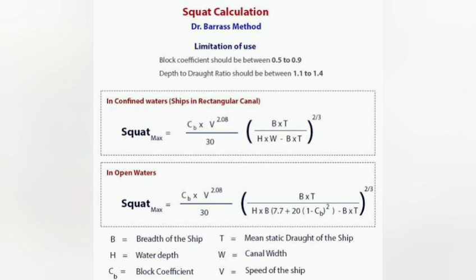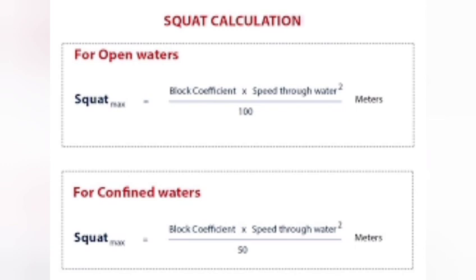Squat effect is usually felt more when the depth-to-draft ratio is less than 4 or when sailing close to a bank. It can lead to unexpected groundings and handling difficulties.